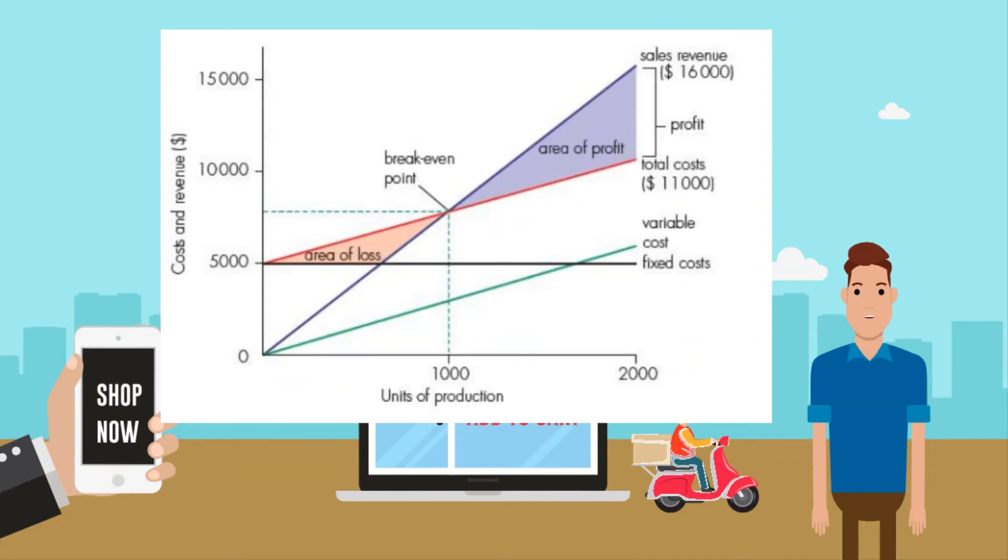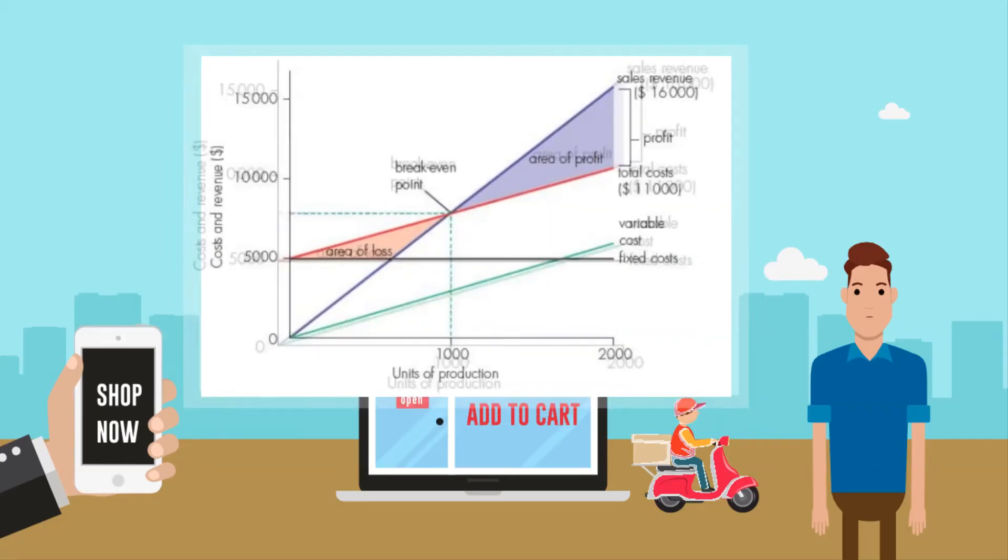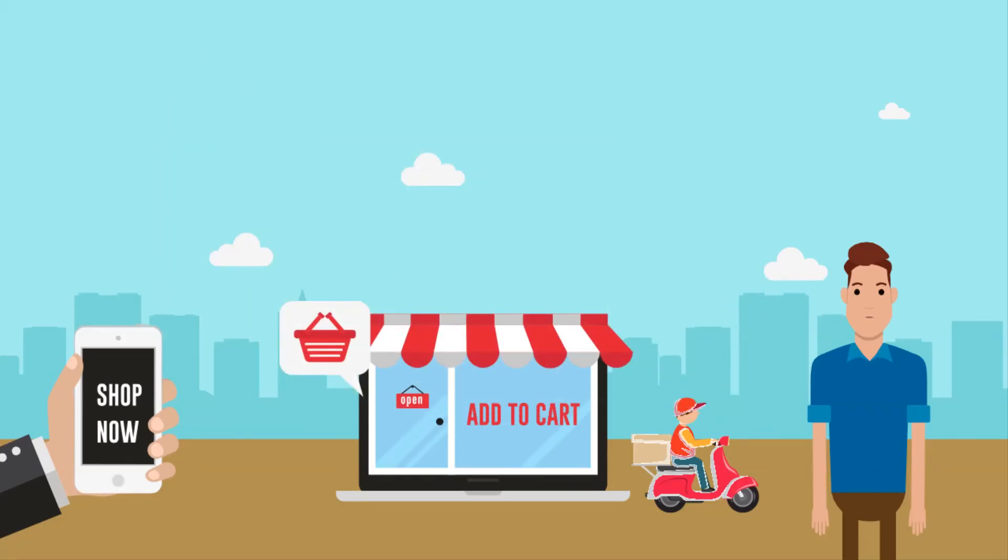A breakeven chart can be drawn that shows the costs and revenues of a business across different levels of output and the output needed to break even. Look in the video description for a link to a worked example of calculating the breakeven level of output. This is something you may be asked to do in an exam.